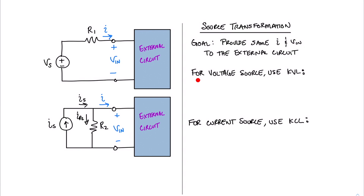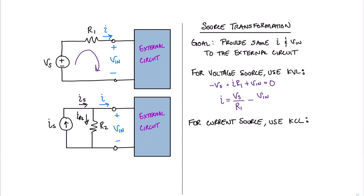Let's look at how we can do a source transformation for the voltage source. To do this, we need to use Kirchhoff's voltage law, and we'll start with a current loop around the source, its series resistance, and the external circuit. We can write this equation as minus Vs plus I times R1 plus Vn equals zero. Simplifying and solving for the current I, we find that I equals Vs divided by R1 minus Vn divided by R1.